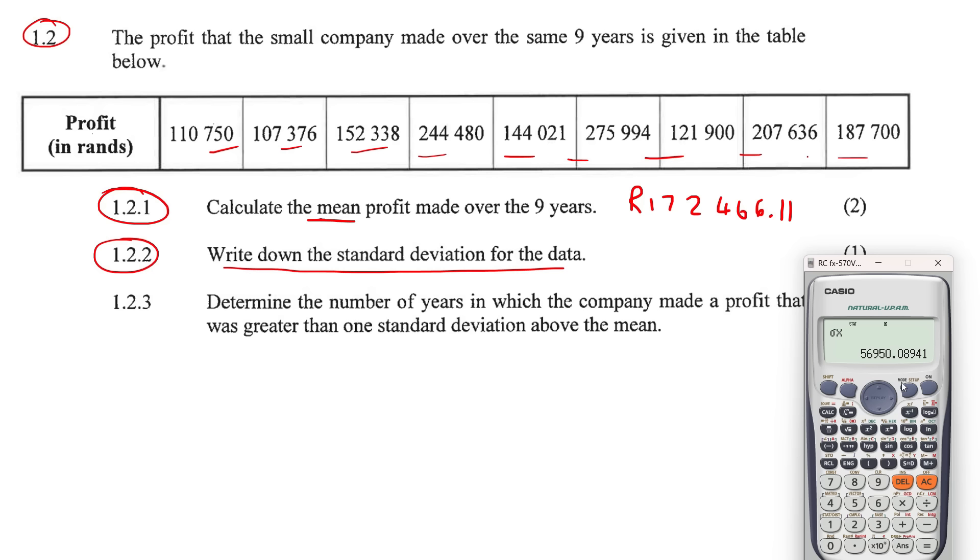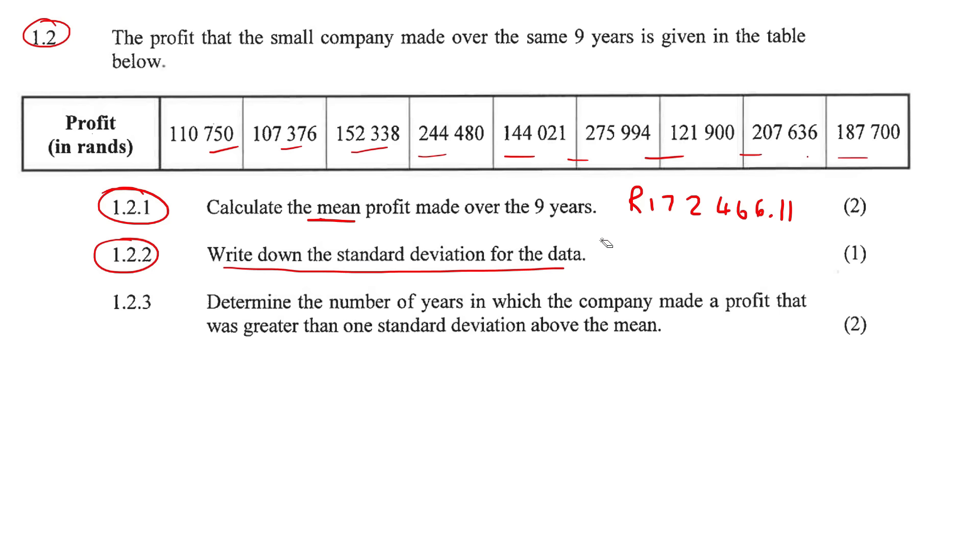Once you've entered all the values, press AC shift one. Now, remember we are in grade 11 statistics now. So we're going to go to four var or whichever it is in your calculator. Now that x with the line at the top, that is actually how to calculate the average. So you could have done that for 1.2.1. But for standard deviation, it's the funny symbol. So it's number three on this one. So you press three, press equals, and there is your standard deviation. 56,950.09. So it was 56,950.09 rand.